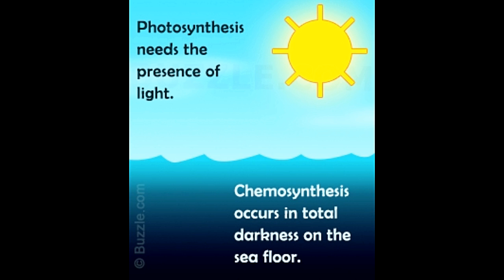When discussing chemosynthesis versus photosynthesis, one important factor that distinguishes these two processes is the use of sunlight. Chemosynthesis occurs in darkness, on the sea floor, whereas photosynthesis requires light energy from the sun to make food.